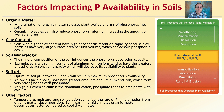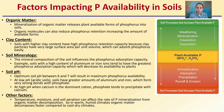The mineralogy of the soil also influences phosphorus absorption capacity. For example, soils with high content of aluminum or iron ions tend to have the greatest phosphorus absorption capacity, which decreases its availability to plants. Regarding soil pH, the optimum is between 6 and 7, resulting in maximum phosphorus availability. Low pH, acidic soils have greater amounts of aluminum and iron, which form strong bonds with phosphate. High pH soils, where calcium is the dominant cation, cause phosphate to precipitate with those calcium ions. Temperature, moisture, and soil aeration can also affect the rate of phosphorus mineralization from organic matter and decomposition.